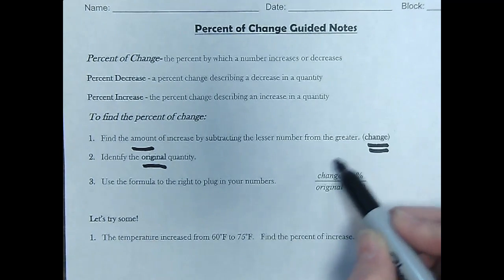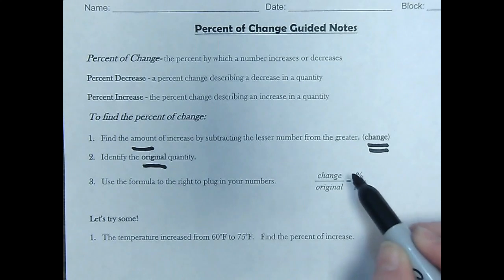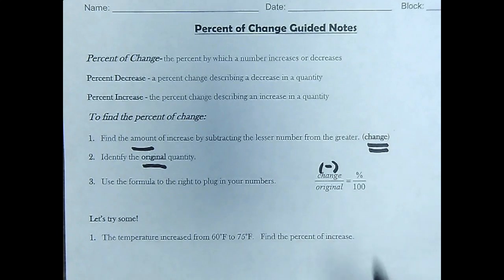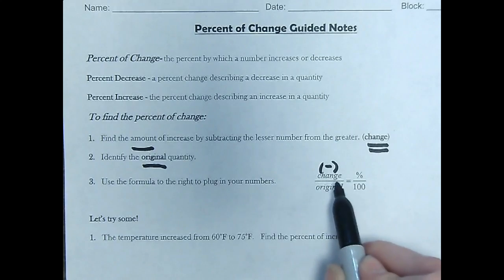And then we're going to use our proportion formula. So the percent over 100 is the change over the original. Remember, the change is the amount of change. So you actually have to subtract the two numbers, the original and the new.